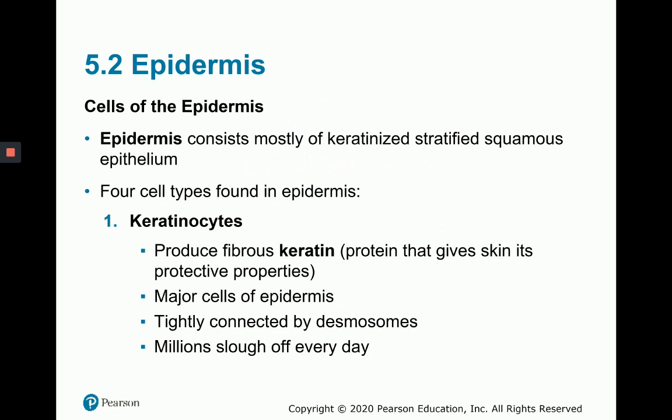The epidermis is keratinized stratified squamous epithelium, meaning the top layer of cells are dead keratinocytes — just a layer of keratin because the living component of the cell is no longer intact. There are four cell types in the epidermis. The keratinocyte is the major cell type and produces keratin, giving skin its protective properties. Keratinocytes are tightly connected by desmosomes.